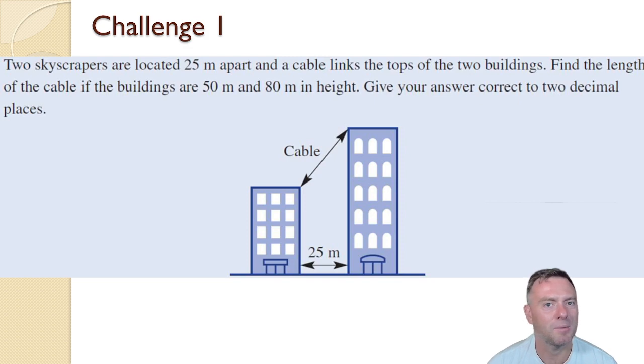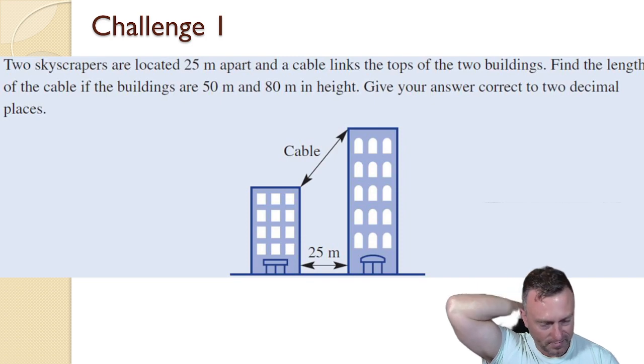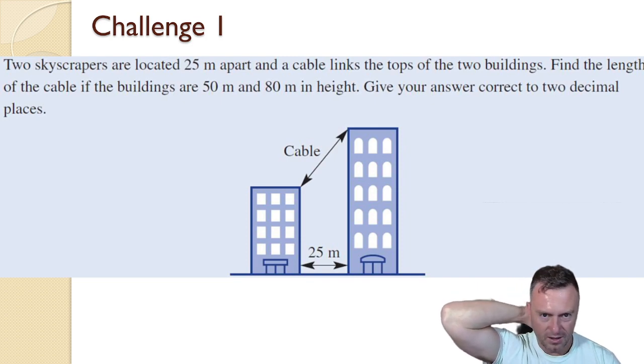The next example: if you've got two skyscrapers that are located 25 meters apart and then a cable link that links the top, find the length of the cable if the buildings are 50 and 80 meters in height. Give your answer to the correct two decimal places. So just pause the video there, have a go and see what happens.